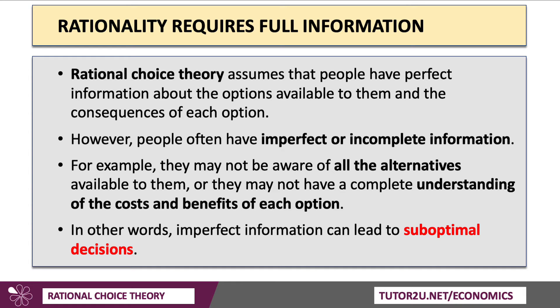Rational choice theory requires full information — perfect information about all the options available to us and the consequences, the costs and benefits, of the choices we make. However, people have imperfect, incomplete information. They experience information failures or information asymmetries — for example, they may not be aware of all the alternatives when buying a new washing machine, a new electric car, or a complex product like a pension. Clearly, that can lead to sub-optimal decisions.